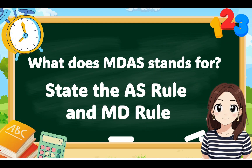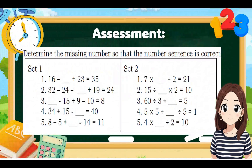Now let's answer: What does MDAS stand for? It stands for Multiplication, Division, Addition, and Subtraction. State the AS rule and MD rule. For your assessment, determine the missing number so that the number sentence is correct.